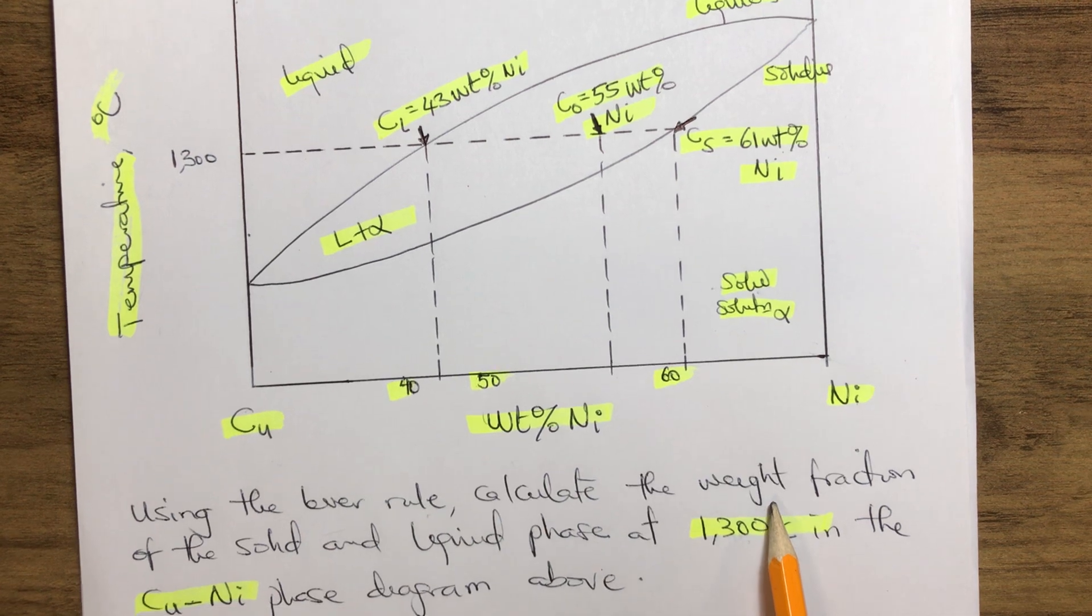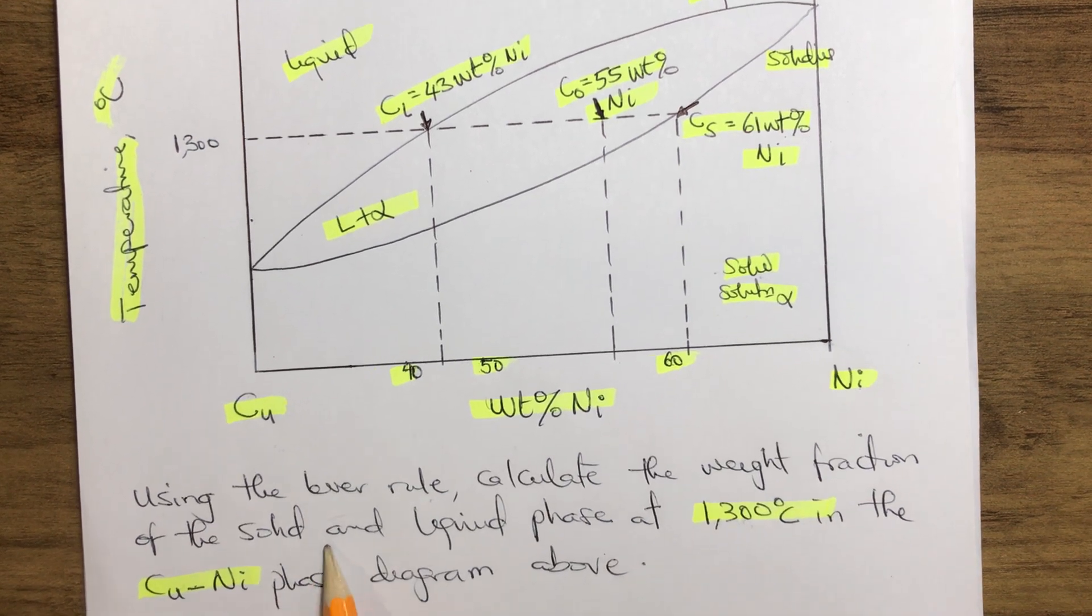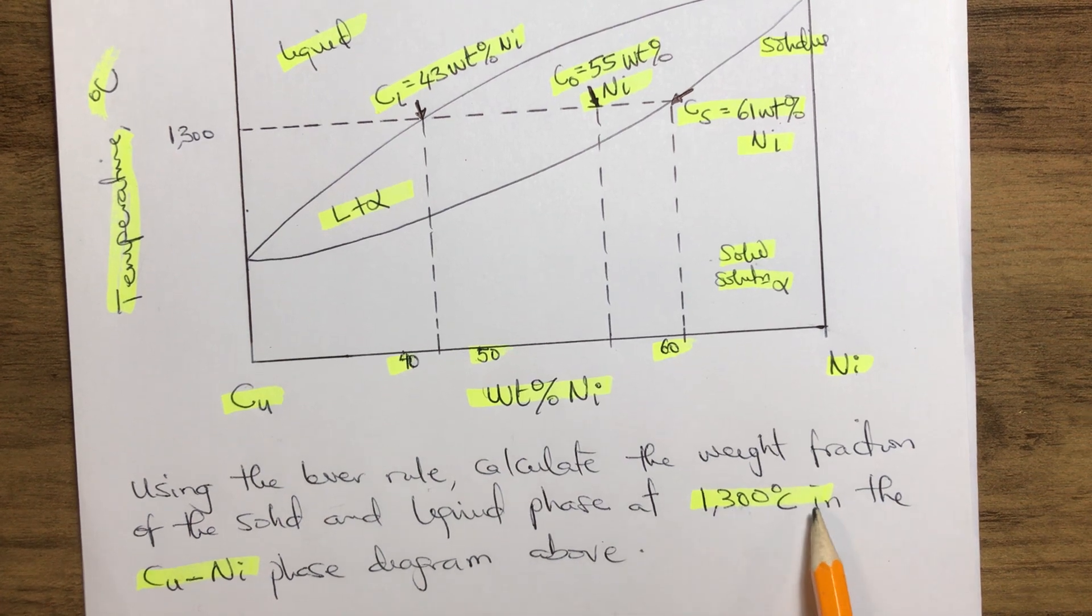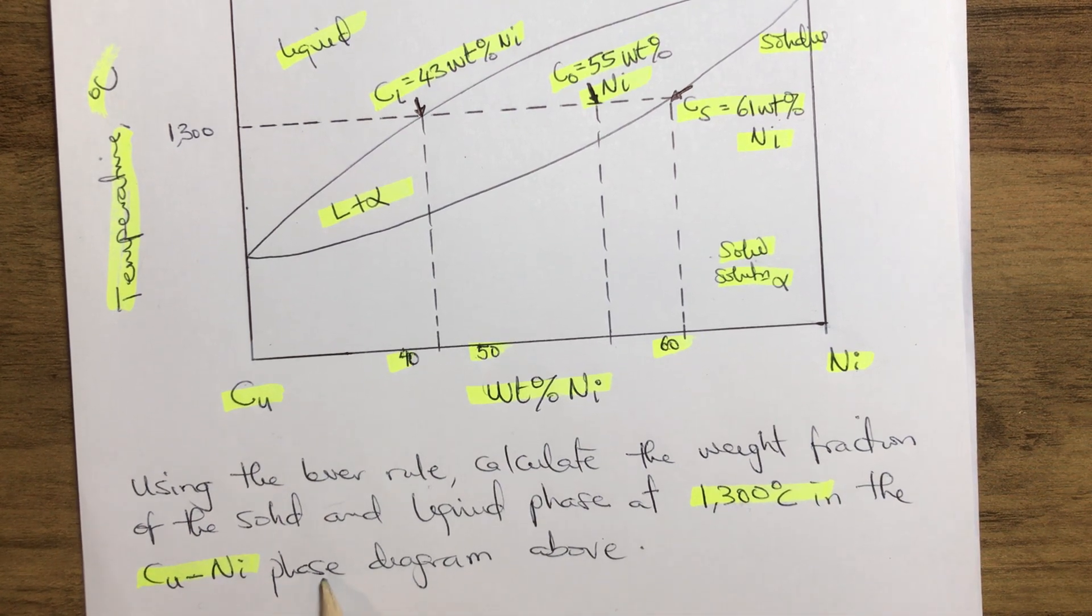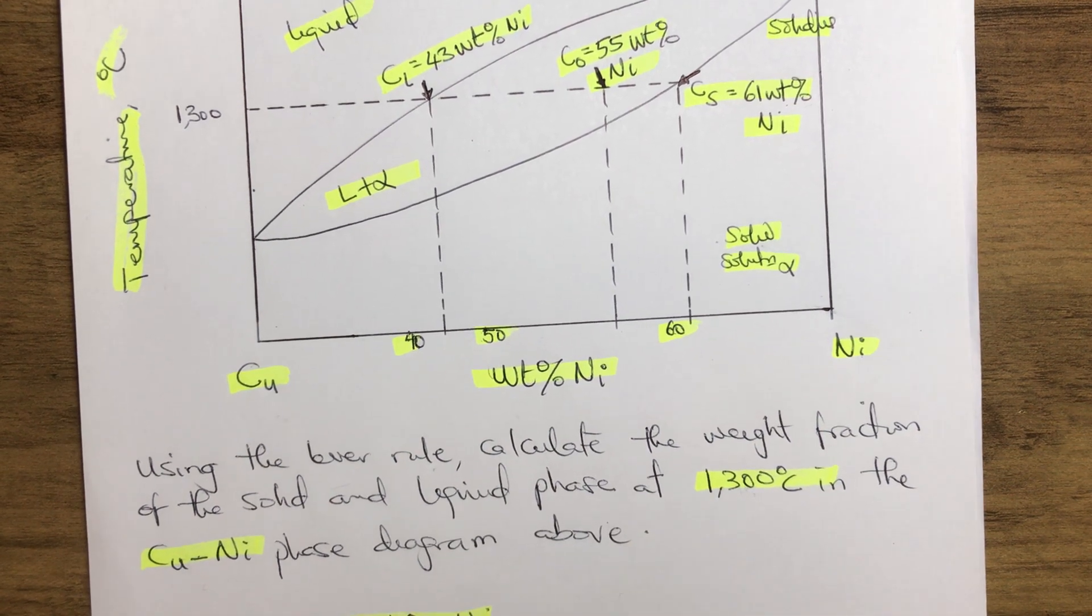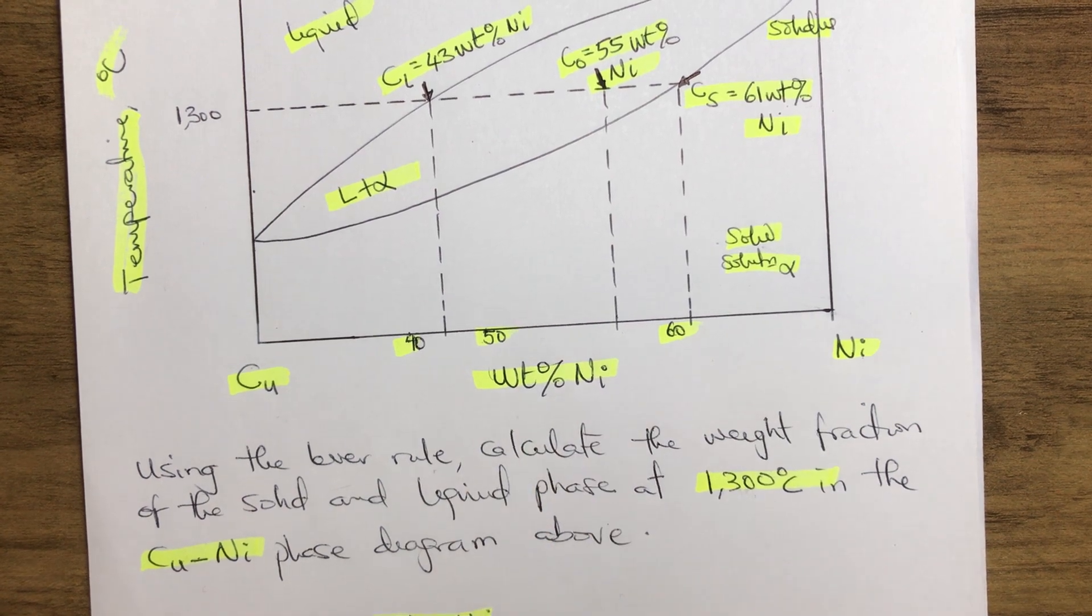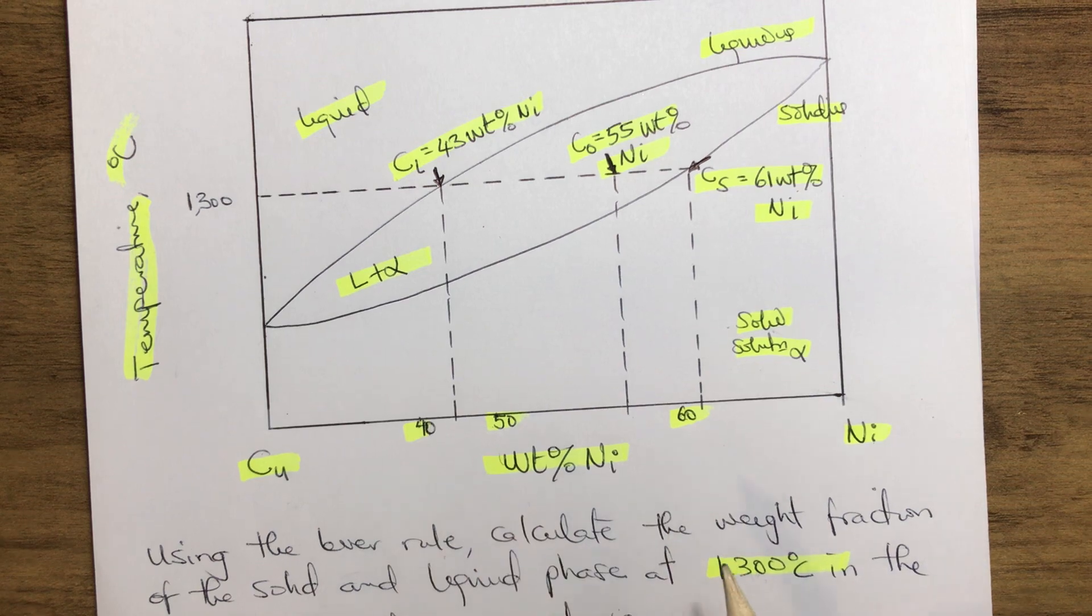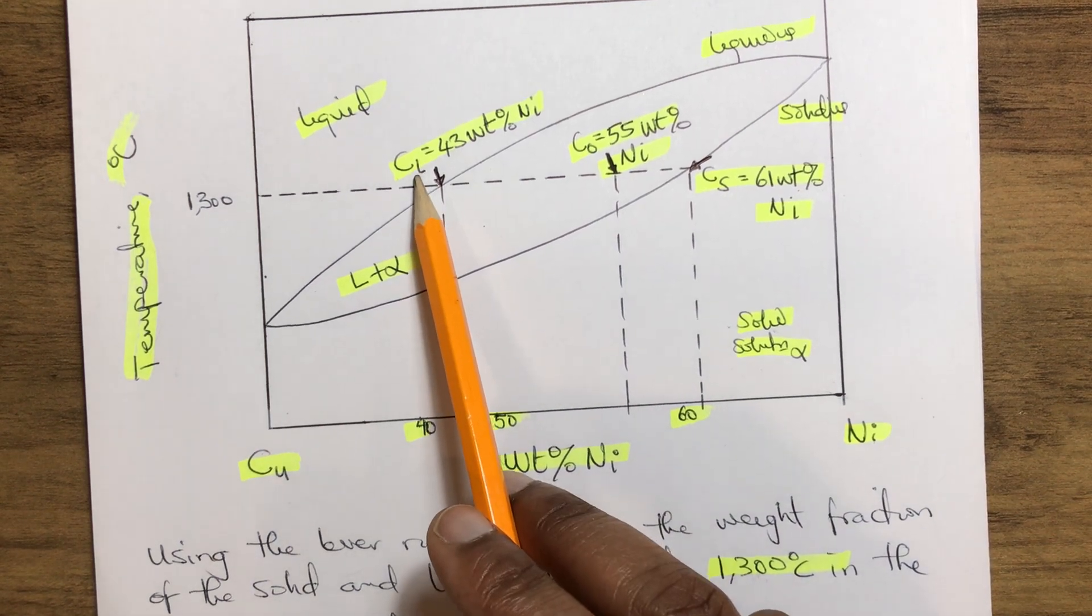Using the lever rule, calculate the weight fraction of the solid and liquid phase at 1300 degree Celsius in the copper-nickel phase diagram above. Now let's pull out our parameters. We have our copper on the liquid phase: